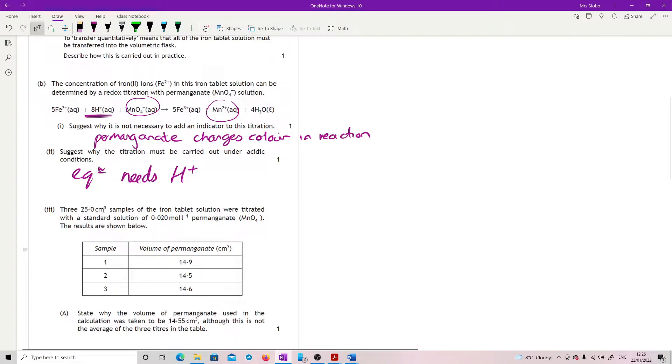Three 25 centimeter cubed samples of the iron tablet were titrated with a standard solution of 0.02 molar permanganate. Results are shown below. State why the volume of permanganate used in the calculation was taken to be 15.55, although that's not the average of the three titers. 15.55 is the average of these two. So 14.9 is basically your rough and therefore shouldn't be counted in the calculation to get the average. I like using correct terms: concordant results used for average.